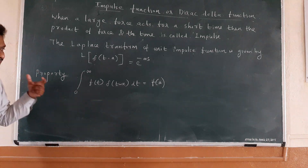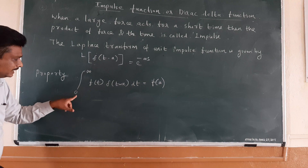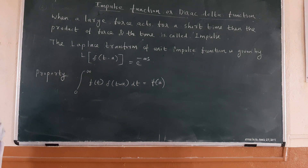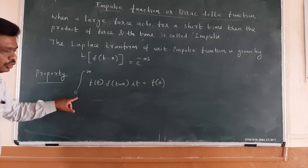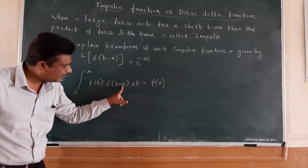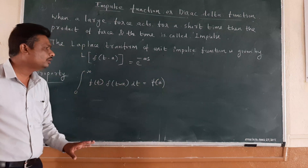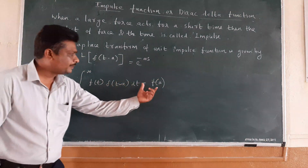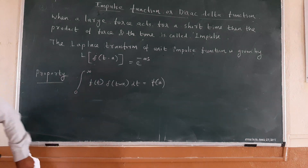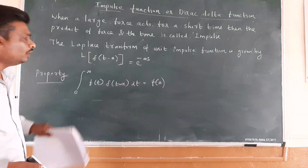While solving examples, we are going to use one property: the integral from 0 to infinity of f(t) · δ(t − a) dt is equal to f(a). This property will be used while solving the examples. Now we solve some problems based on these two results.